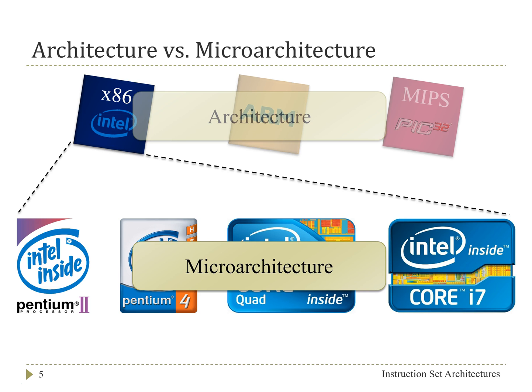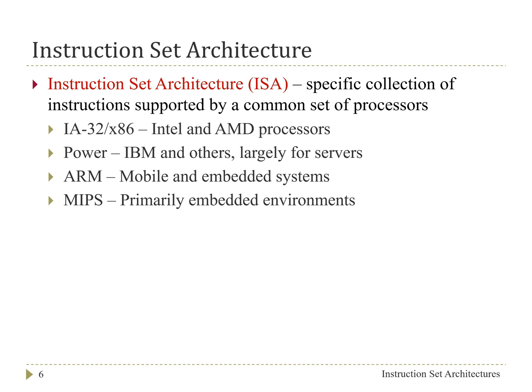The microarchitecture is the actual implementation of a particular architecture. The instruction set architecture, or ISA, is a specific collection of instructions supported by a common set of processors. Common ISAs include IA32 or x86, executed by Intel and AMD processors; Power, a family of ISAs for processors created by IBM and other companies, largely for servers; ARM, very popular in mobile and embedded systems; and MIPS, now in embedded environments, though it has been in other computing domains in the past.